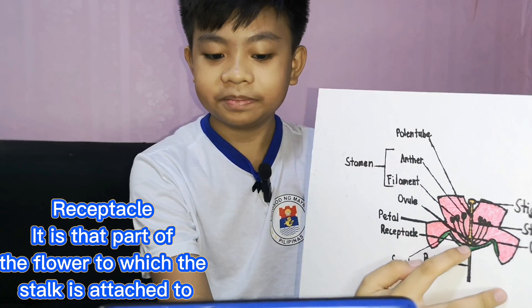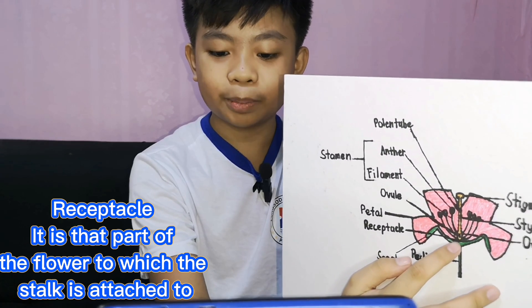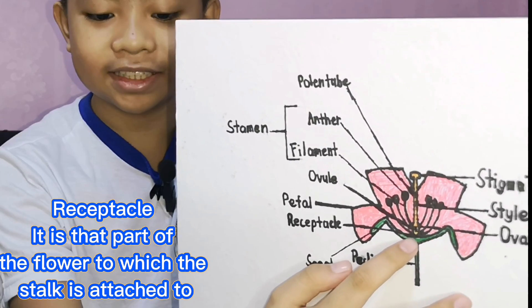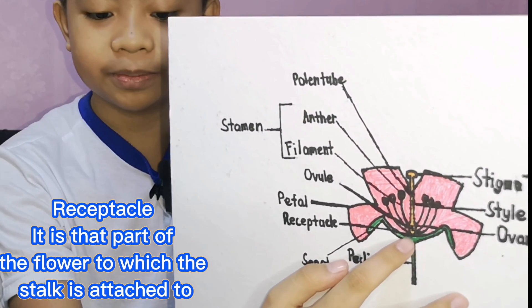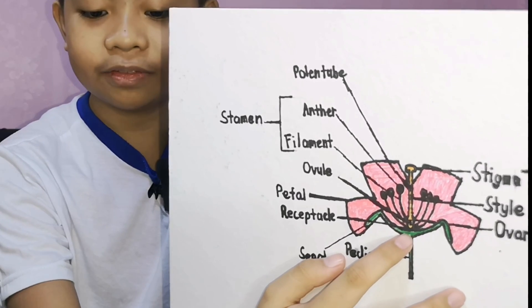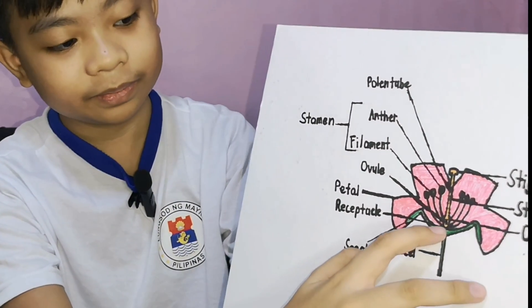The receptacle. It is that part of the flower to which the stalk is attached. It is small and found at the center of the base of the flower.